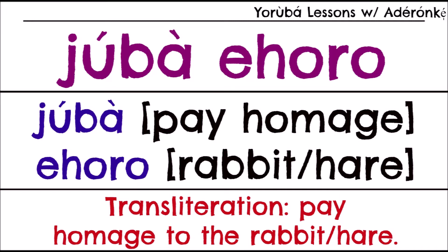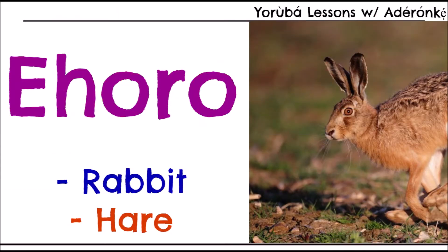And 'eoro' is the rabbit or the hare. So when you say 'juba eoro,' you're saying 'pay homage to the rabbit or hare.' Per this usage, it's more hare than rabbit. The translations of both rabbit and hare into Yoruba would still be 'eoro,' but I'll tell you how you can differentiate between the two.